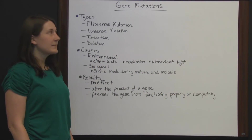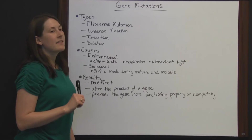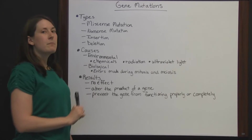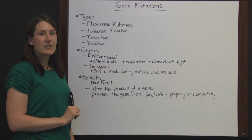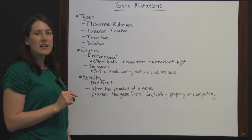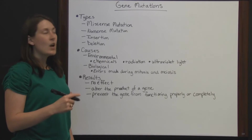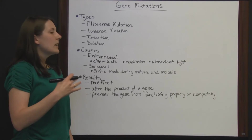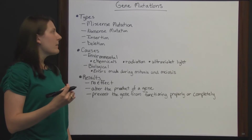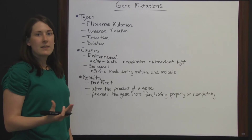Gene mutations have several different types. One would be a missense mutation, which is where one segment of DNA is substituted for another segment of DNA, which tells the gene to make a certain amino acid.